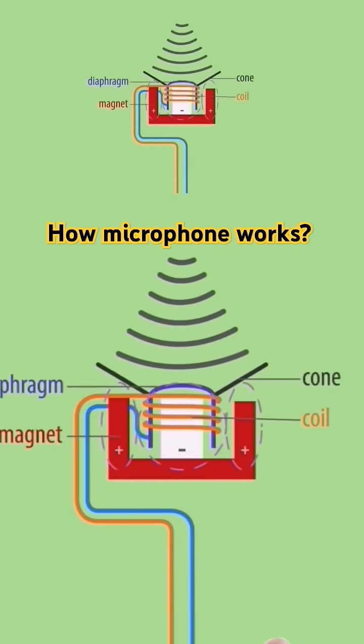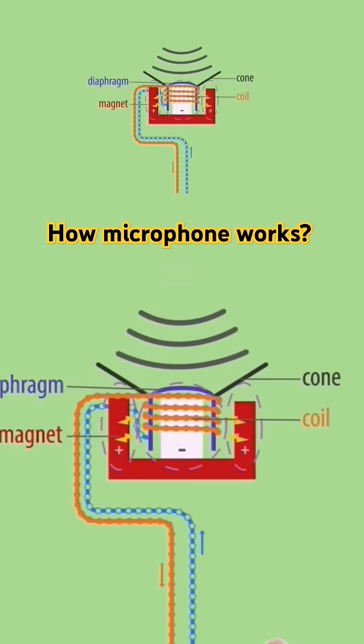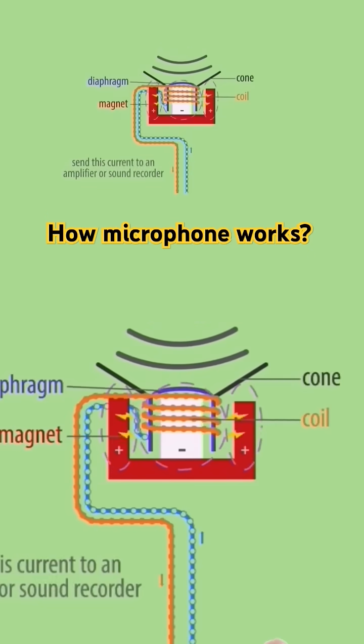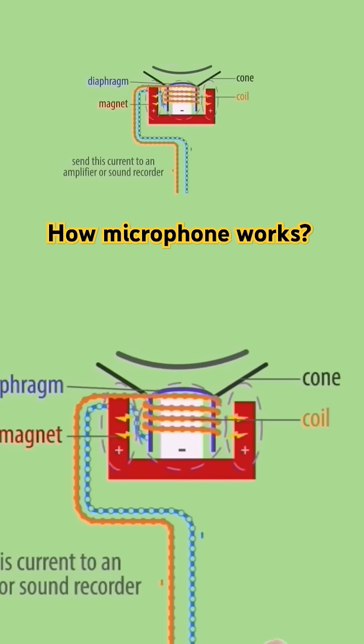The sound waves hitting the diaphragm are moving the coil, and the coil's movement past the magnet creates an electrical current. This electrical current is your sound signal.